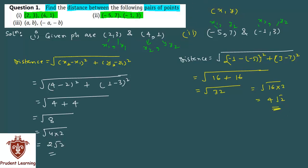Let's see the last section of the same question. We are given a,b and minus a, minus b. The given points are a,b and minus a, minus b. Again, a is your x1, b is your y1, minus a is your x2, and minus b is your y2.